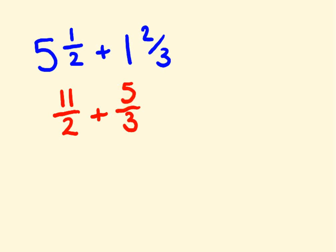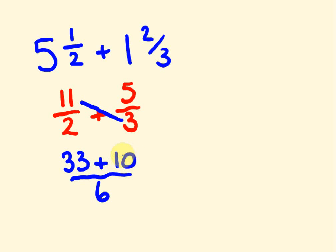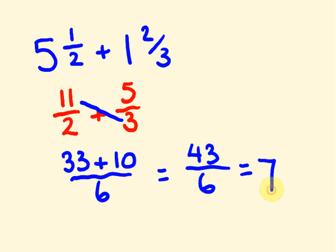So to get the bottom number, two times three is six. Then we start over here and multiply these two numbers: eleven times three is thirty-three. Keep the plus, and two times five is ten. This equals thirty-three plus ten, which is forty-three over six. We're stuck with an improper fraction, so forty-three divided by six — seven sixes are forty-two — we get seven with one left over. So the answer is seven and one sixth.